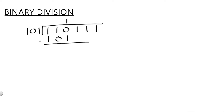0 minus 1 — we can't do 0 minus 1, so we need to borrow from here. So this becomes 0 and this becomes 2. And 2 minus 1 is equal to 1. 0 minus 0 is equal to 0. And 1 minus 1 is equal to 0. Bring down 1 here. Is 11 greater than or equal to 101? The answer is no, so this is going to be 0.